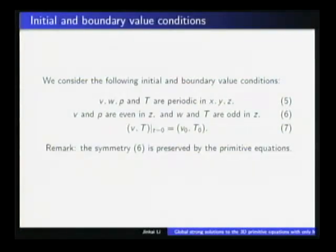In this talk, we consider the fully initial and boundary value conditions. Since we are mainly interested in the structure of the system, we use no boundary effect. So we consider the periodic boundary value problems and some symmetry assumption in the z variable, that is the vertical variable. We know that the symmetry is preserved by the primitive equation itself, as long as it is satisfied initially.